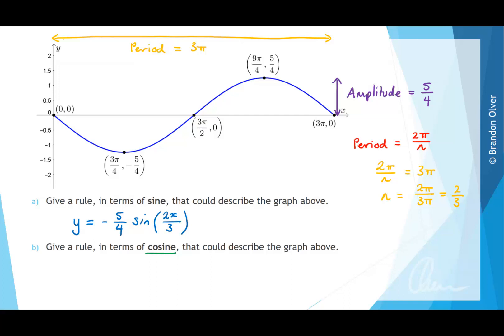So if we started with something like y equals 5 over 4 times cos of 2x over 3, we'd have something that looks like this. So it would come down and then come back up. And what we'd find is if we could translate this, we'd be able to get that graph to sit perfectly on top of the blue graph that we're trying to find an equation for.